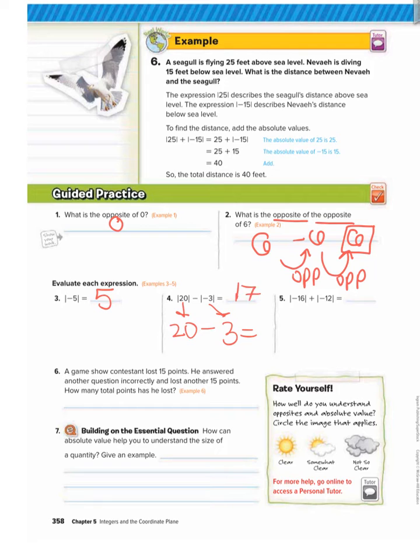Number five: absolute value of negative 16, which is positive 16, plus absolute value of negative 12, which is positive 12. Because negative 16 is 16 units from zero and negative 12 is 12 units from zero, when you add these you get 28.